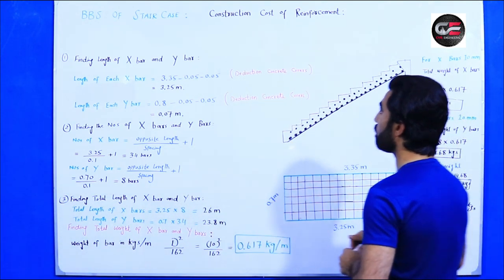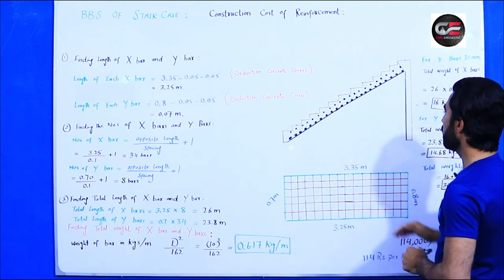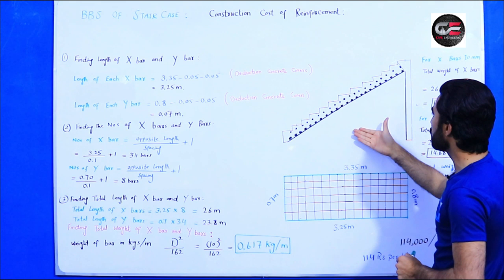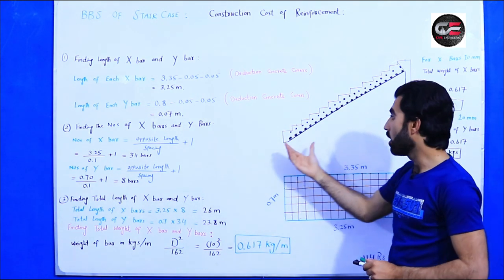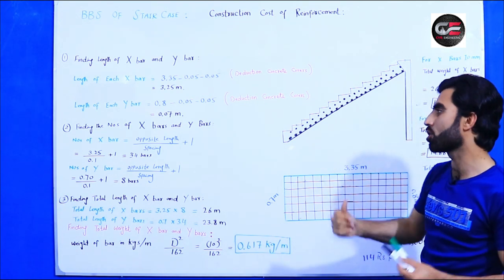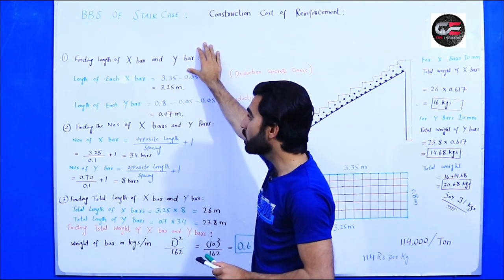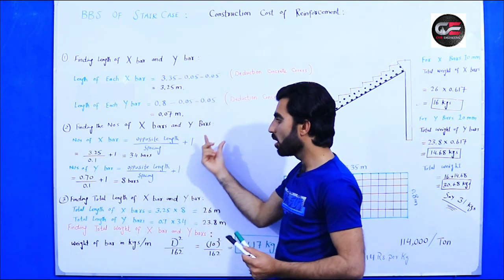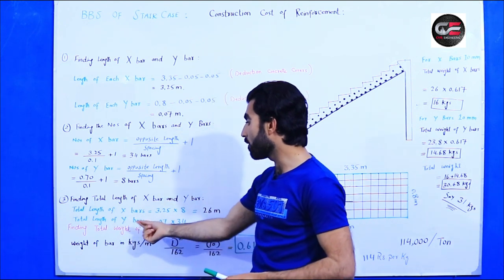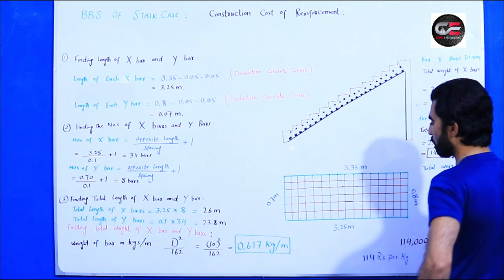Let's start. The topic is BBS of staircase and construction cost of reinforcement for staircase. You can see here a cross-section of a straight stair. We will find the quantity of steel — x-bars and y-bars — and their numbers. What we'll discuss: first, finding the length of x-bars and y-bars; second, finding the numbers of x-bars and y-bars; third, finding the total length; and fourth, finding the total weight of x-bars and y-bars.